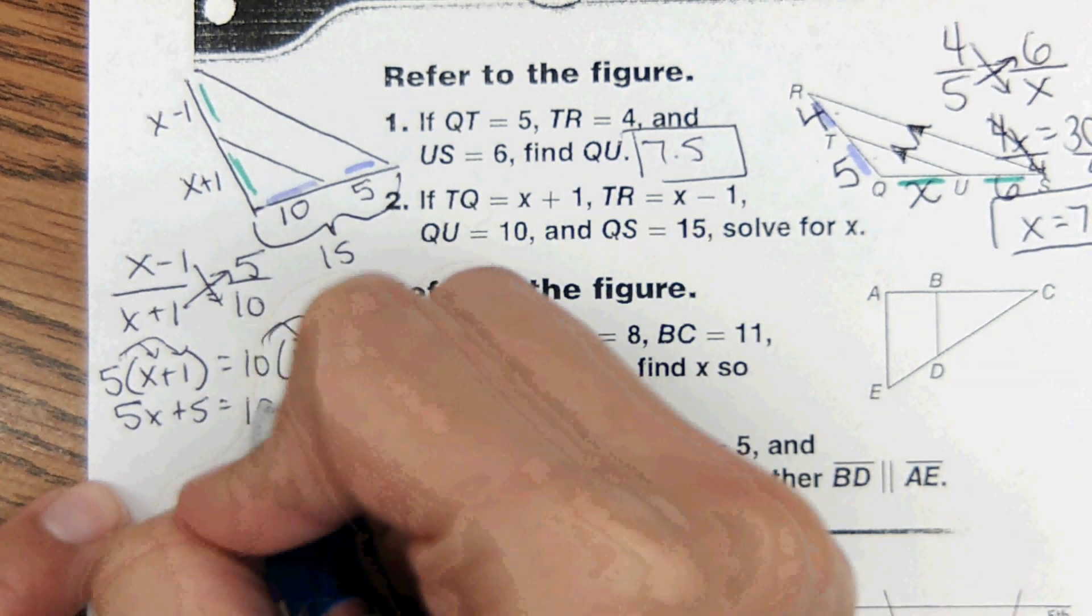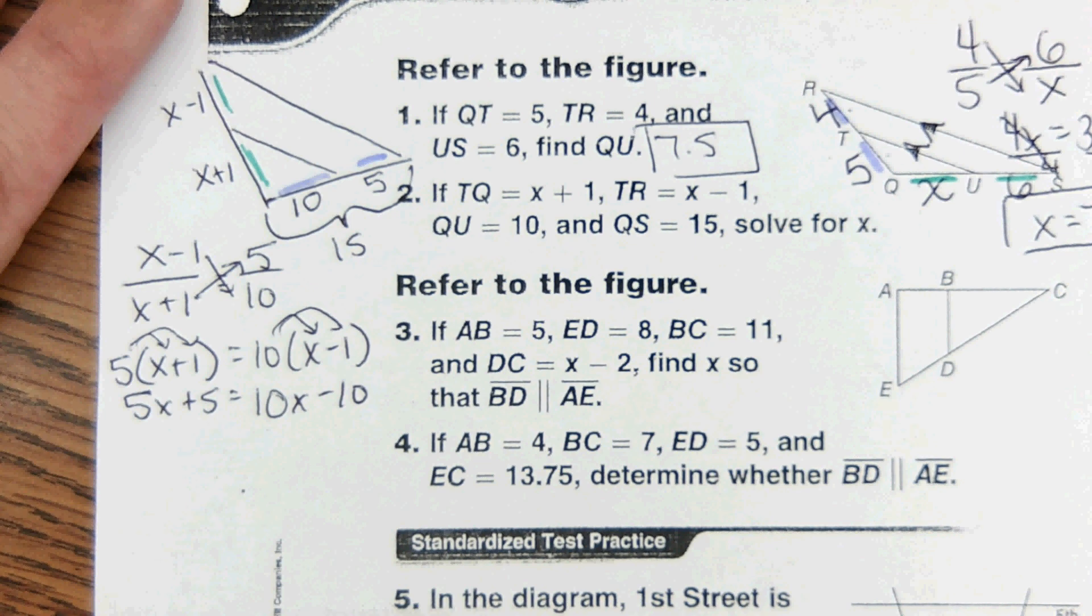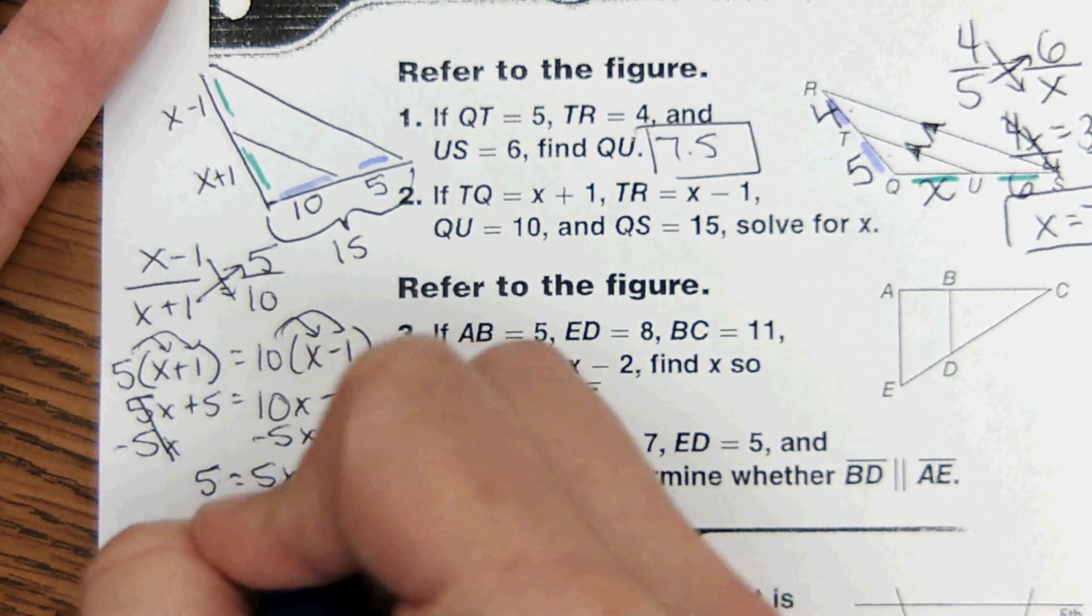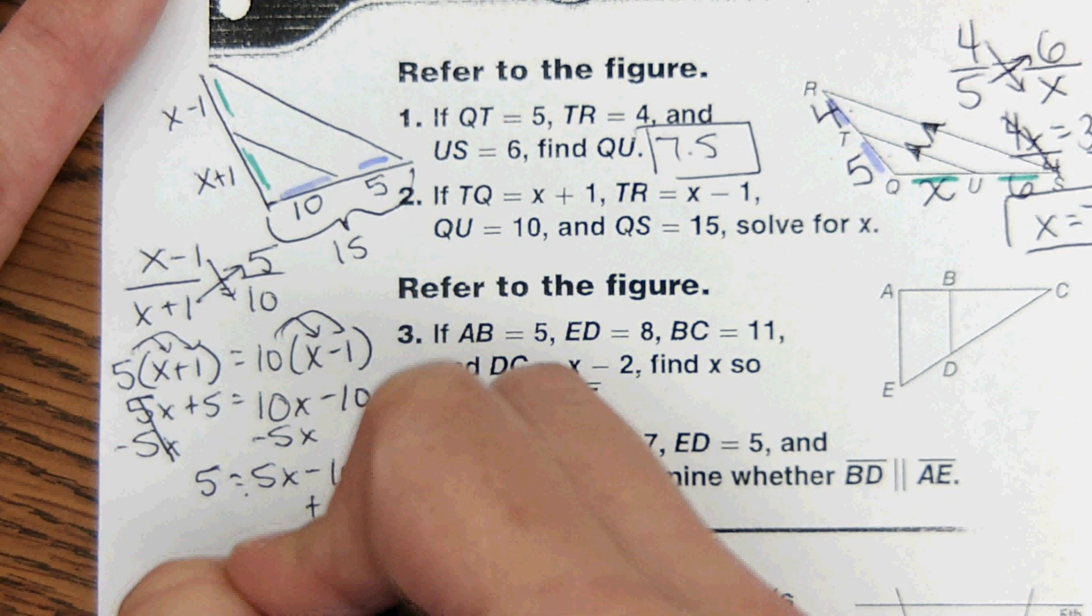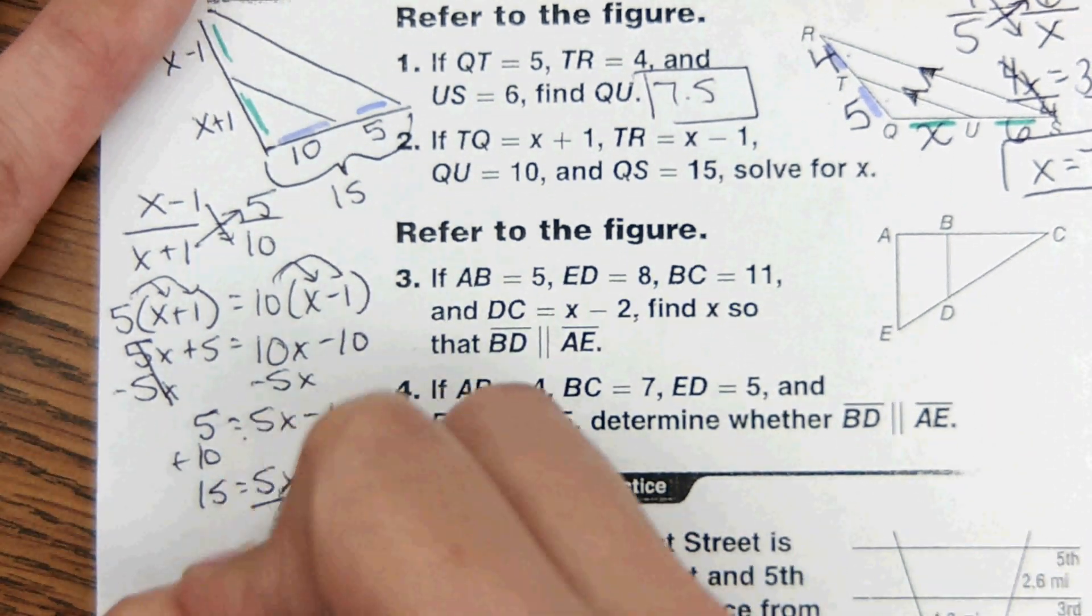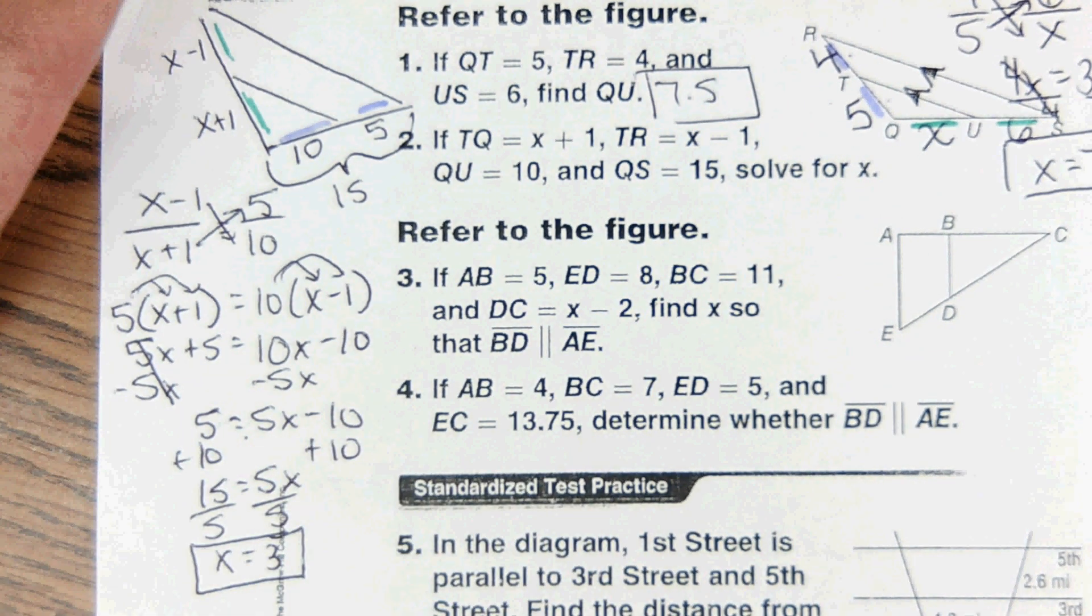And then to start solving this, we're going to distribute: 5x plus 5, and then multiply 10 by both of these numbers to get 10x minus 10... x equals three, x equals three.